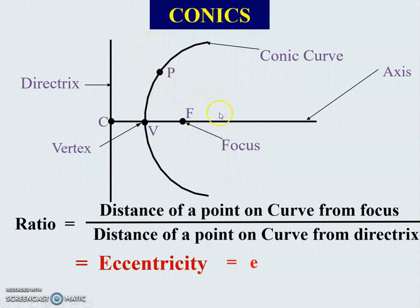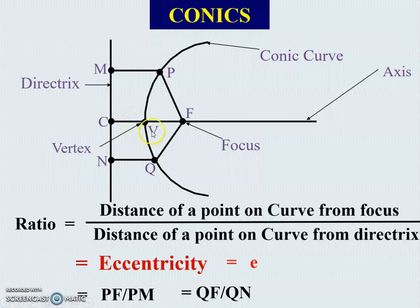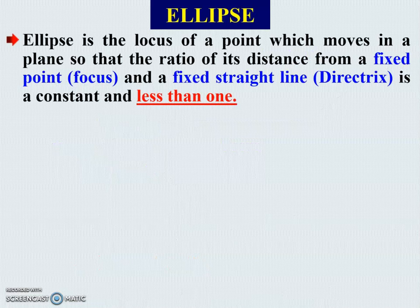If there is a point P on the curve, the ratio will be PF divided by PM. Similarly, if there is another point Q on the curve, the eccentricity will be QF divided by QN. The vertex is the point on the conical curve which intersects the axis — that is V. So V is also a point on the curve, and therefore the ratio for vertex V equals VF divided by VC. Here we have studied the definition of conics according to the eccentricity.